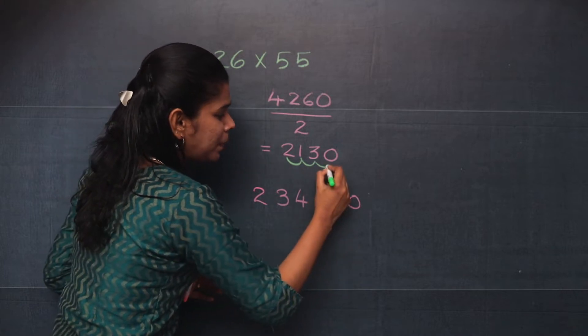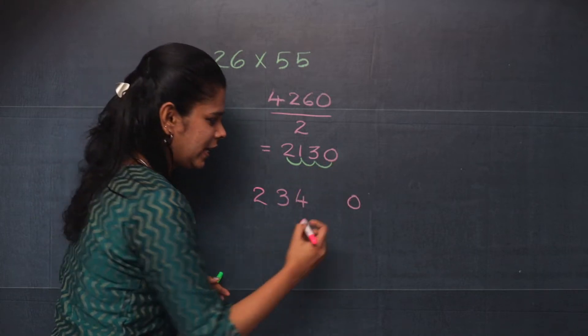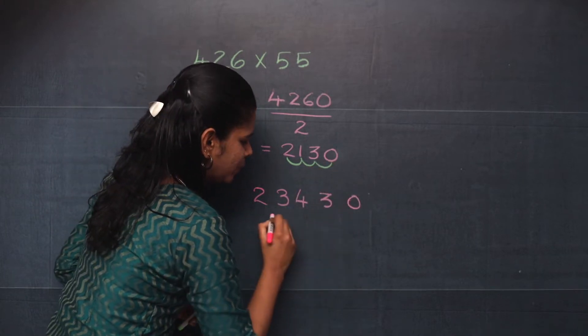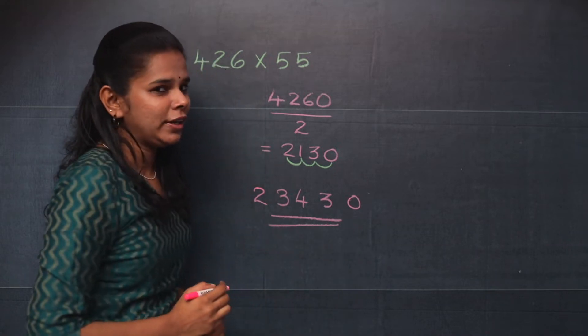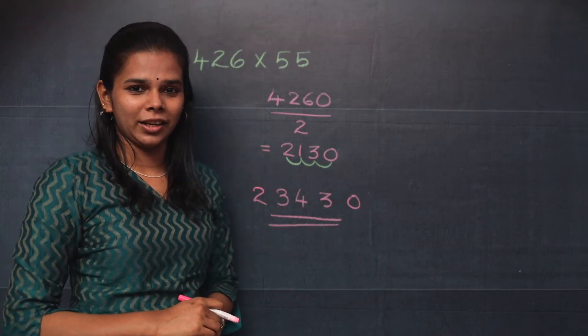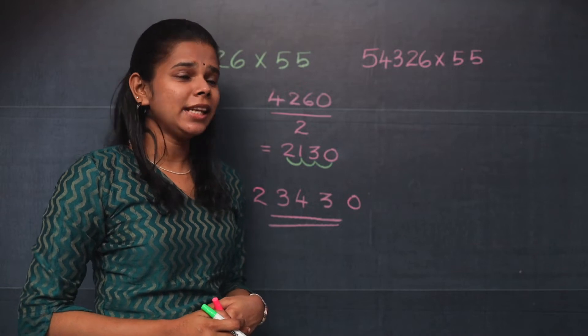Now 3 plus 0, it is 3. So you will write this here. Your answer is 23,430. Now let us move on to the second question.